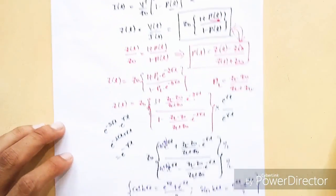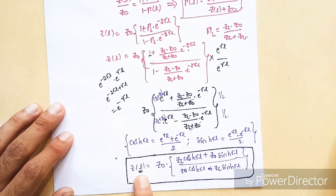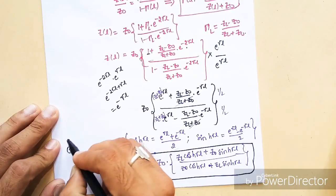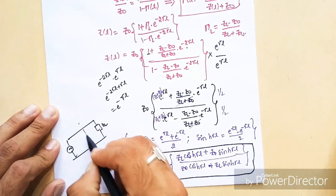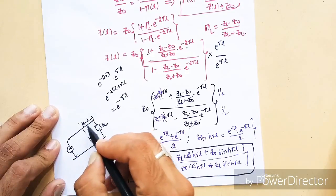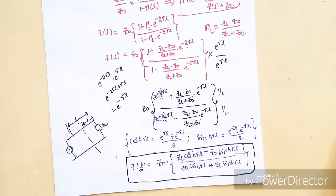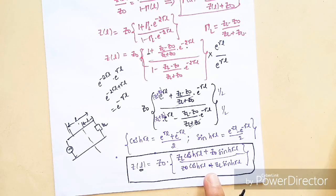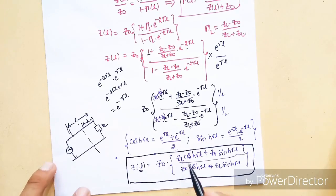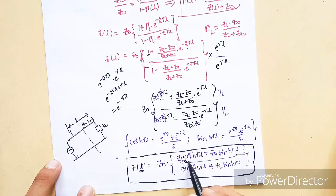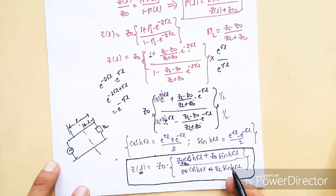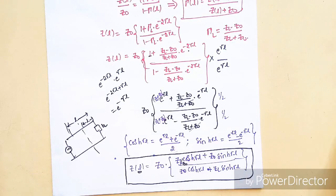If the impedance at any point is given and you are asked to find the impedance at any length l along the line — whether from the load end or from the generator — you can easily find it using this formula. This is called the impedance transformation relation. If you divide by Z0, taking Z0 common in both numerator and denominator, that is called the normalized impedance, which I will explain in the next video. Thank you for watching and please subscribe to our channel for more videos.